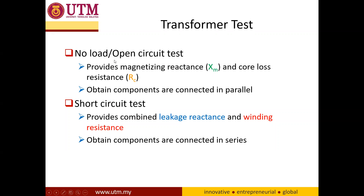In the open circuit test, the parameters that we obtain are the magnetizing reactance XM and the core loss resistance RC. While when conducting a short circuit test, the parameters that we obtain are the leakage reactance X and also the winding resistance R.